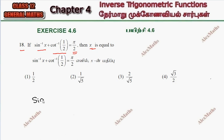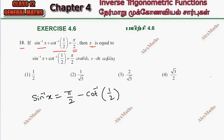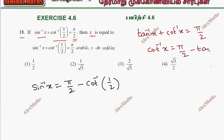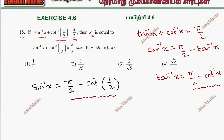If we have sin inverse x, we can write it as pi by 2 minus cot inverse 1 by 2. So using the formula: tan inverse x plus cot inverse x equals pi by 2. If we take cot inverse x, it equals pi by 2 minus tan inverse x. And if we take tan inverse x, it equals pi by 2 minus cot inverse x. Applying this formula, sin inverse x equals pi by 2 minus cot inverse x.